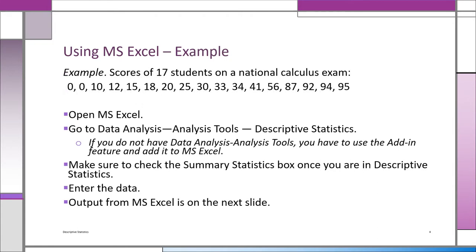Let's learn how to use Excel, a very powerful tool for statistics. We have 17 students' scores on a national calculus exam. Notice a couple got a zero and the highest grade looks like 95. You open MS Excel, go to data analysis, look for analysis tools, and then look for descriptive statistics. Once you're in descriptive statistics, make sure to check the summary statistics box. Enter your data, run it, and you'll get the output.